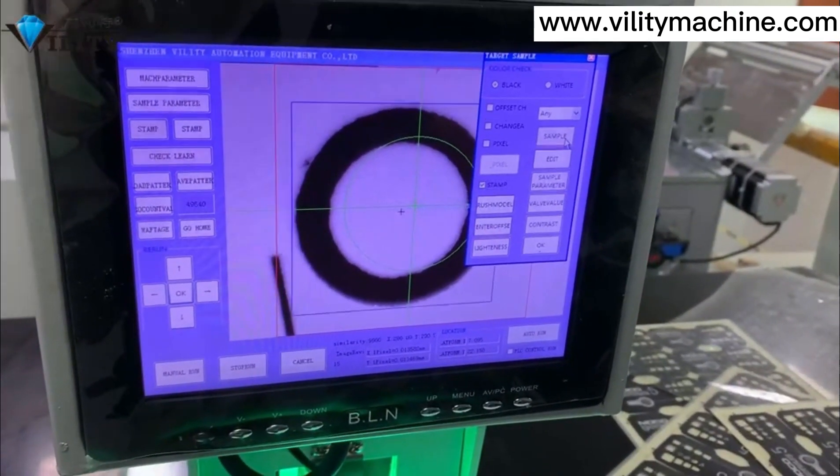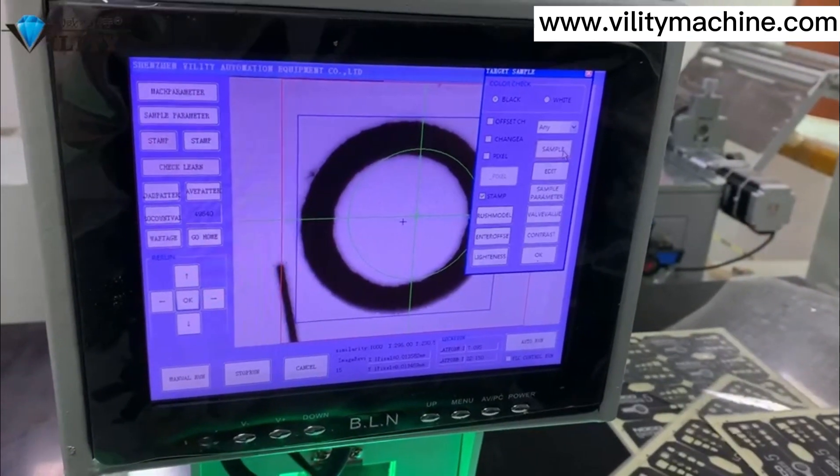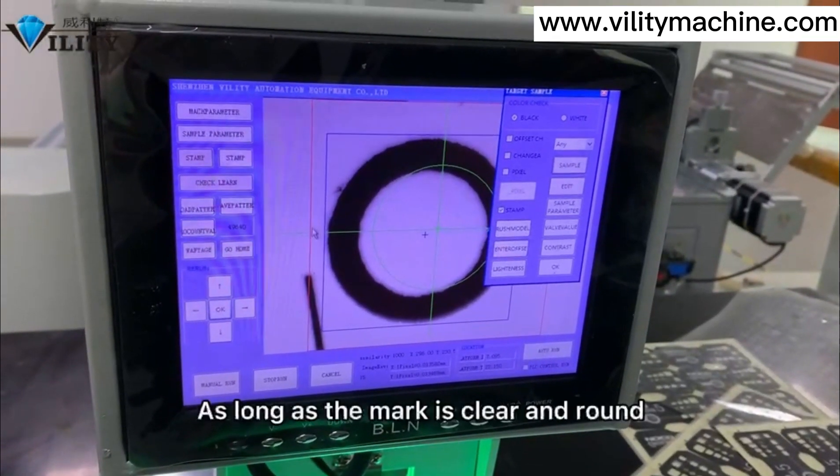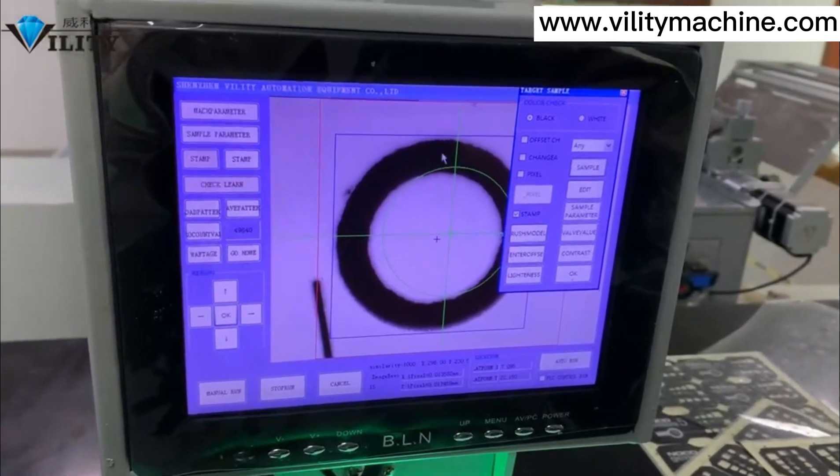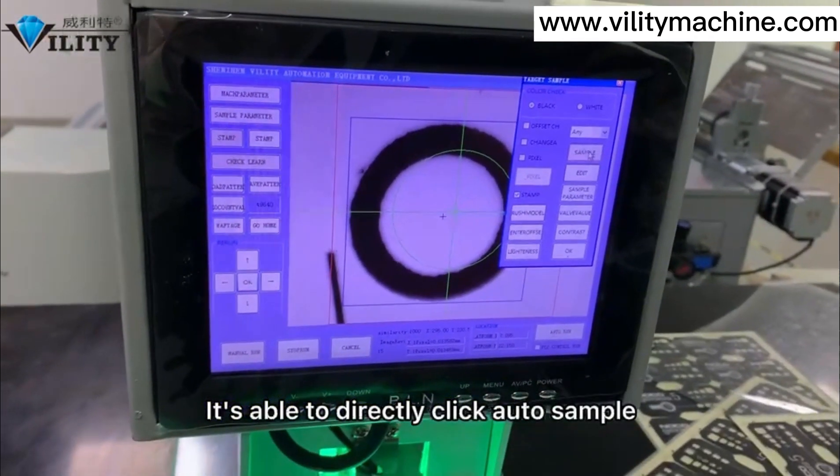Check the stem, then click sample. As long as the mark is clear and round, you can directly click auto sample.